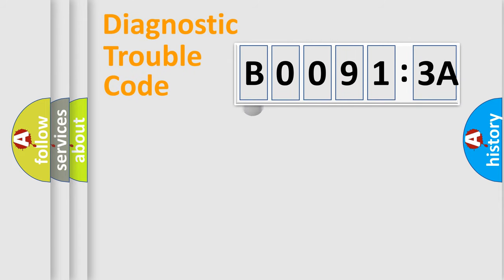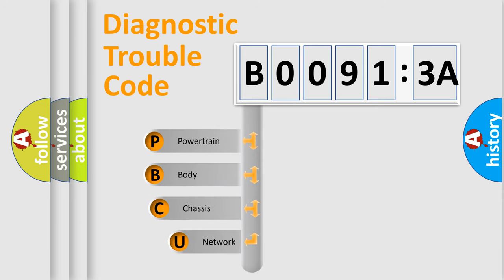First, let's look at the history of diagnostic fault code composition according to the OBD2 protocol, which is unified for all automakers since 2000. We divide the electric system of automobile into four basic units.